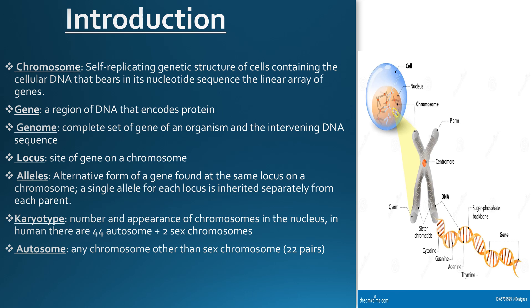Chromosomes are self-replicating structures that contain cellular DNA that bears in its nucleotide sequence the linear array of genes. Let's understand this with the help of this diagram. This X-shaped structure right here is the chromosome. Inside this is the supercoiled DNA.